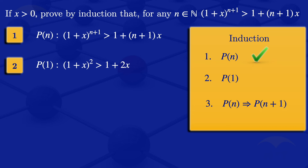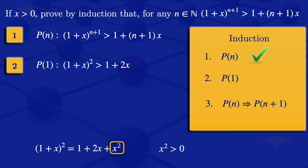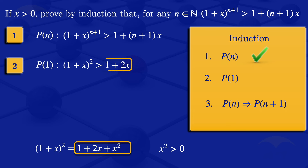We want to check whether this is true. Looking at the left-hand side, 1 plus x squared, when we expand that we get 1 plus 2x plus x squared. Now, since x is greater than 0, x squared is also greater than 0. So on the left-hand side we are adding x squared — a quantity greater than 0 — to 1 plus 2x, which means the left-hand side is greater than the right-hand side. Therefore the base case is true.